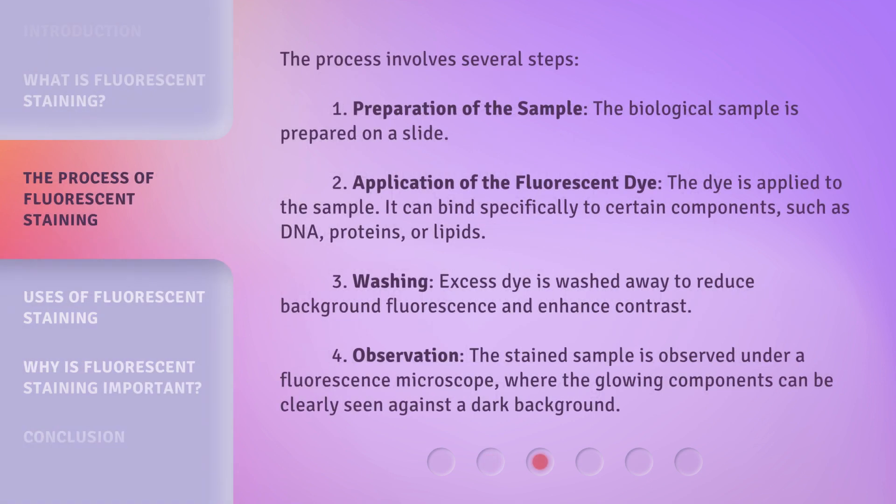The process involves several steps. First, preparation of the sample: the biological sample is prepared on a slide. Second, application of the fluorescent dye: the dye is applied to the sample and can bind specifically to certain components, such as DNA, proteins, or lipids. Third, washing: excess dye is washed away to reduce background fluorescence and enhance contrast.